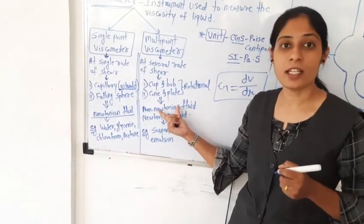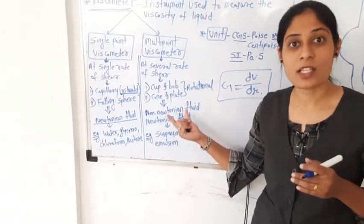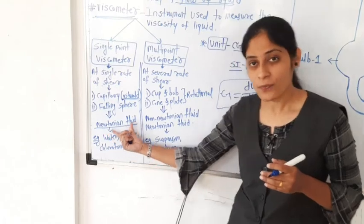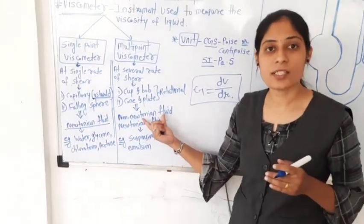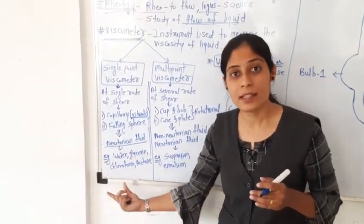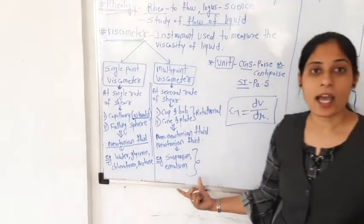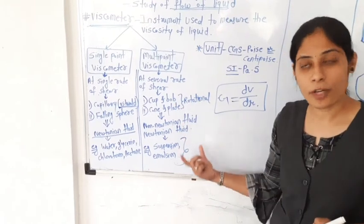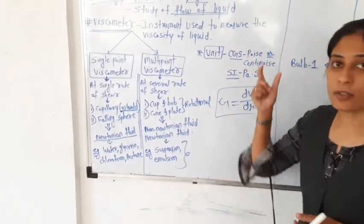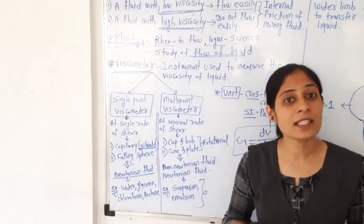In the multipoint viscometer, non-Newtonian fluids as well as Newtonian fluids can be measured. Non-Newtonian fluid means the fluid does not obey Newton's laws of equation; the viscosity changes with rate of flow. In Newtonian fluid, viscosity does not change with rate of flow, but in non-Newtonian fluid, viscosity changes with rate of flow. In the single point viscometer, low viscous liquids are included. In the multipoint viscometer, higher viscosity samples such as suspensions and emulsions are included.